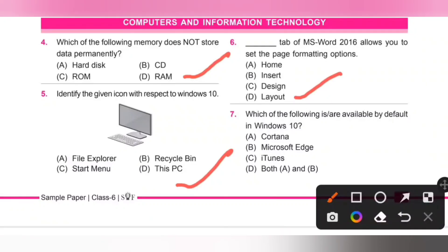Seventh one: Which of the following are available by default in Windows 10? Option A: Cortana, yes it is available. B: Microsoft Edge. C: iTunes. Microsoft Edge and Cortana are available by default in Windows 10. Option D is the correct answer, both A and B.